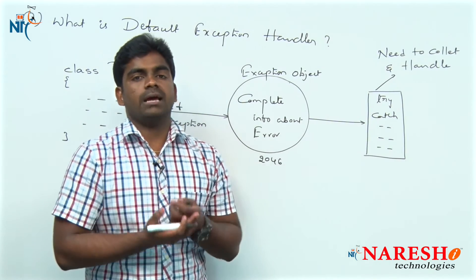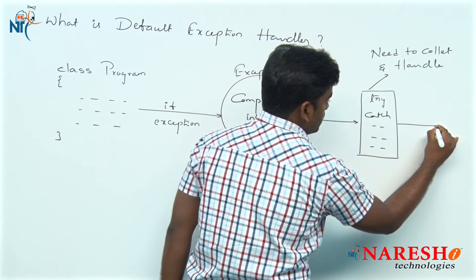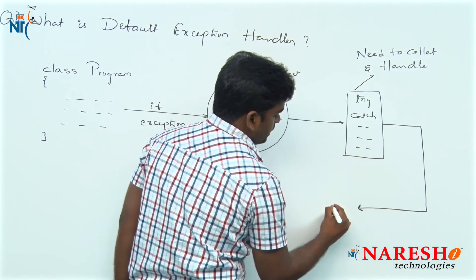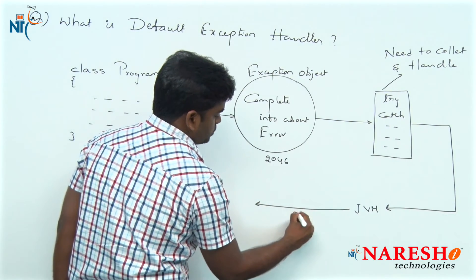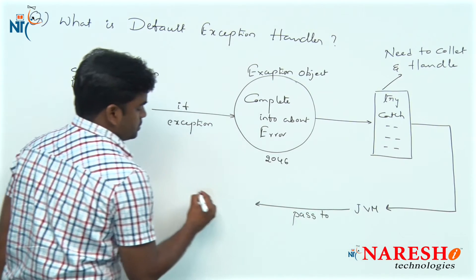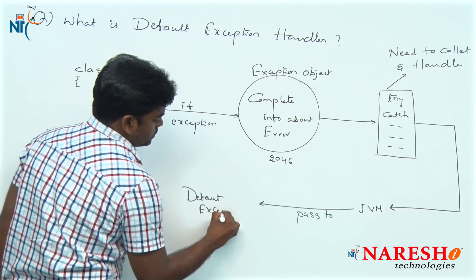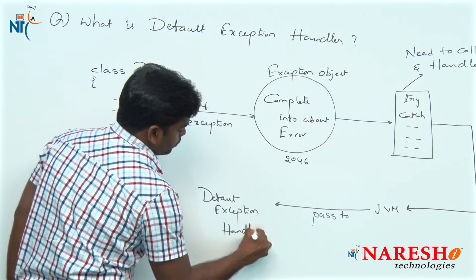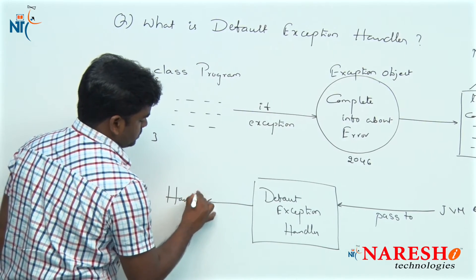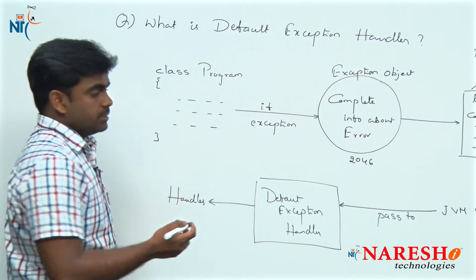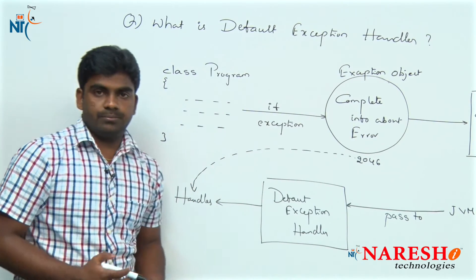Suppose if we do not handle that exception, then what happens? If we are not handling, then that object will be collected by JVM first, and that JVM will pass that exception object to the default exception handler program. Then what the default exception handler will do is — it will handle that exception. This object will be collected by the default exception handler and it will handle it.